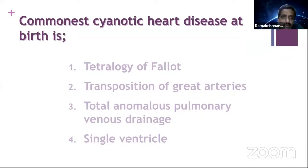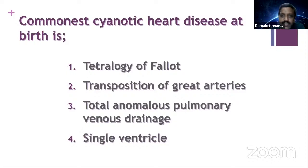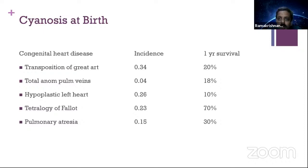What are the commonest cyanotic heart diseases at birth? The incidence of transposition of great arteries is 0.34, tetralogy is 0.23, hypoplastic left heart is 0.26, and pulmonary atresia is 0.15. But the 1-year survival in TGA is only around 20% — with intact ventricular septum it falls to 10%. Total anomalous pulmonary venous connection: 82-88% are dead at 1 year. Pulmonary atresia: 70% dying. In tetralogy, only 30% die and 70% survive. That is why beyond the first year of life, tetralogy becomes the most common cyanotic congenital heart disease.